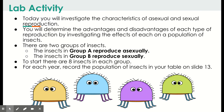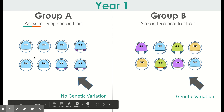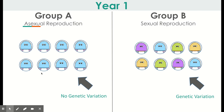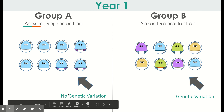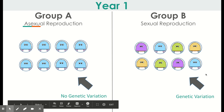To start, you're going to have eight insects in each group, and for each year your job will be to record the population of insects in your table on slide 13. Here is year one. You can see group A is on the left side — these insects reproduce asexually, and there's no genetic variation because all of the organisms are the same color. Group B insects reproduce sexually, and you can tell there's genetic variation because they are different colors.